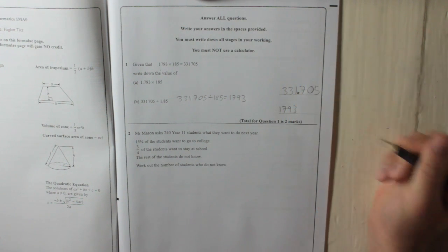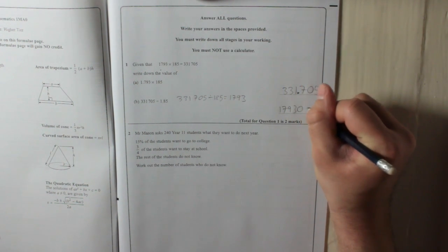1,793. Multiply it by 100. You learnt it in primary school. Add two zeros on the end.